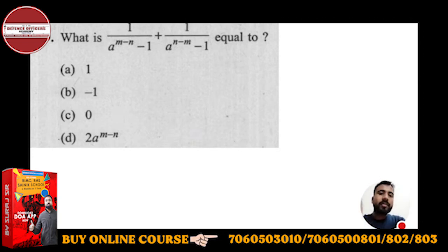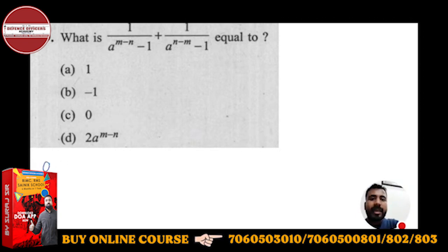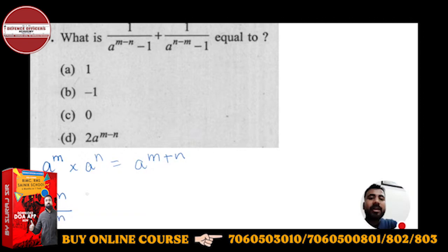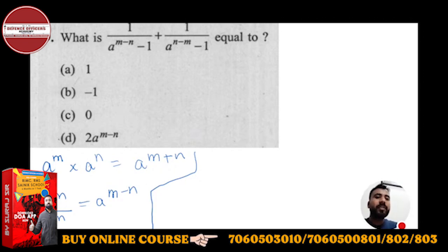There are some important properties we need to keep in mind. Do you know that a^m × a^n can be written as a^(m+n)? When the base is the same, you can add the powers. And if it is a^m ÷ a^n, you can write it as a^(m−n). Using these two properties we are going to solve this very easily.